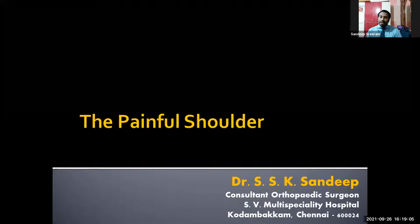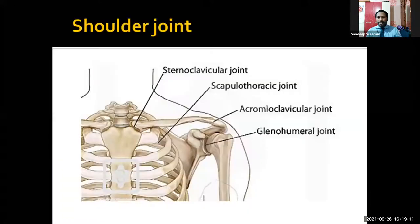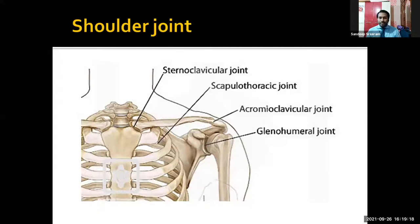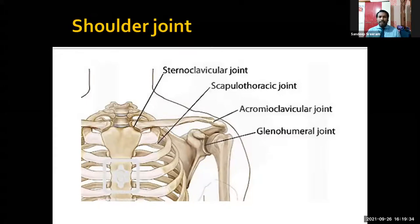Shoulder joint is the third most common orthopedic condition presenting to a general practitioner's clinic. A small note on anatomy: we think shoulder joint is one joint, but it is not. It comprises four joints — the sternoclavicular, scapulothoracic, acromioclavicular, and glenohumeral joint. Maximum movement occurs at the glenohumeral joint, and that is where our concentration will be, though the other joints are also very important.